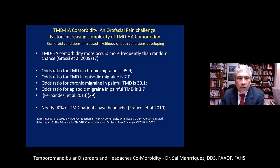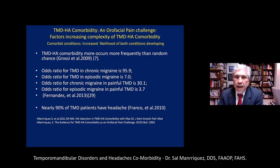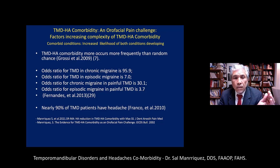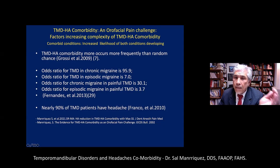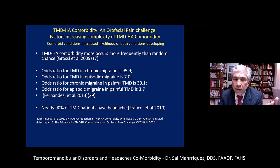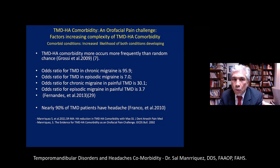There is a reason why these conditions develop together. Fernandez and colleagues found that the odds ratio for developing temporomandibular disorders if you have chronic migraine is almost 96 — meaning the chance is nearly 100 times greater than without chronic migraine. Likewise, the odds ratio for developing chronic migraine if you have painful TMD is over 30. If you have a patient with painful TMD, the odds of them developing chronic migraine are more than 30 times greater. This is an important take-home lesson to look for this comorbidity in all your patients.